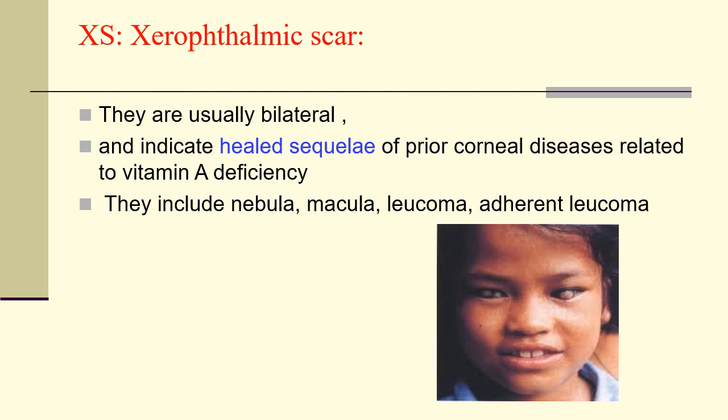XS is the corneal scar or xerophthalmic scar. Healing of stromal defects results in corneal scars of different densities and sizes, which may or may not cover the pupillary area. They are generally bilateral because of vitamin A deficiency and indicate healed sequelae of prior corneal disease. They can have different grades of opacity: nebula, macula, or leucoma; if there is perforation, adherent leucoma can result.